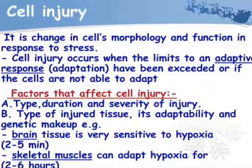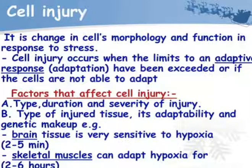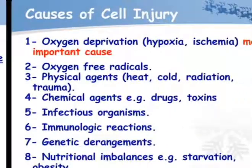Cell injury is a change in the cell's morphology and function in response to stress. It occurs when the limit of the adaptive response has been exceeded or when cells are not able to adapt. Factors that affect cell injury include: the type, duration, and severity of injury, and the type of injured tissue with adaptability and genetic makeup. For example, brain tissue is very sensitive to hypoxia, while skeletal muscle can adapt to hypoxia for 2 to 6 hours.